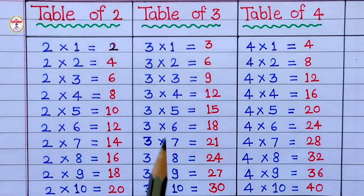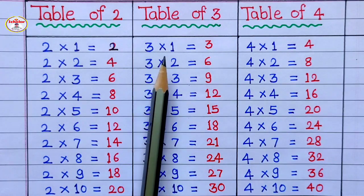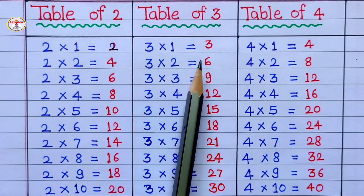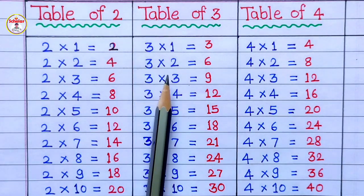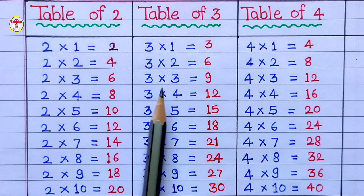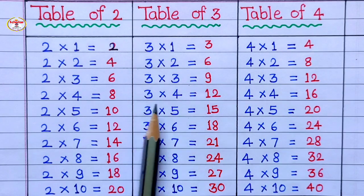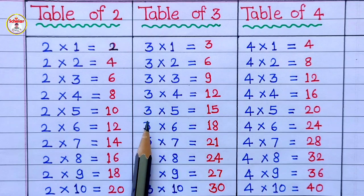Table of 3: 3 1's are 3, 3 2's are 6, 3 3's are 9, 3 4's are 12, 3 5's are 15.